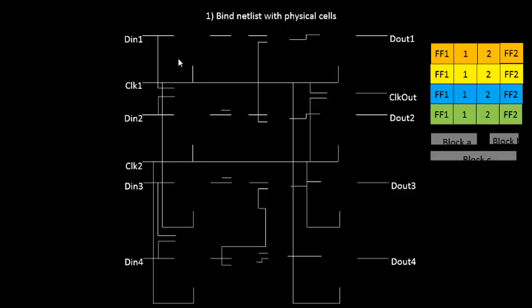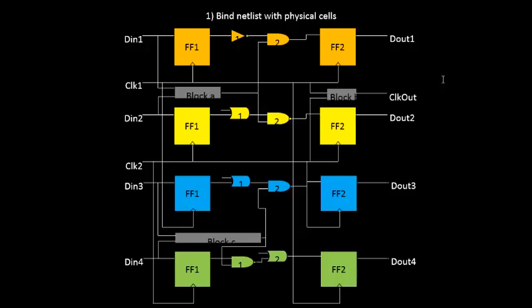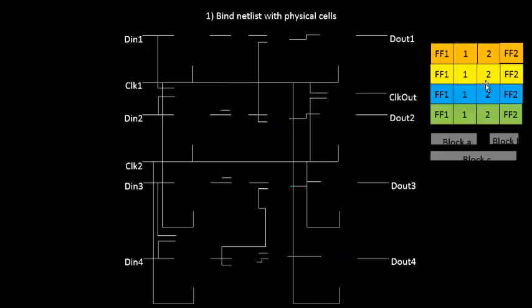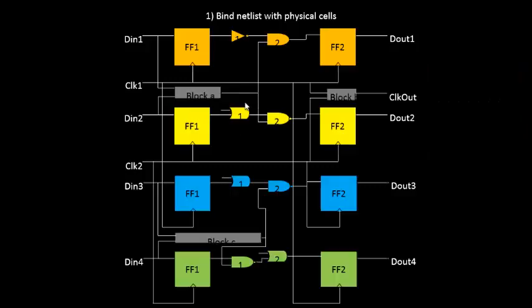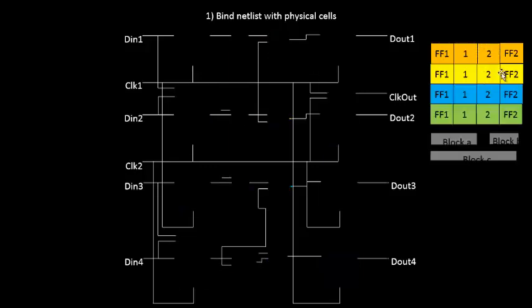First, we have to assign dimensions to these gates — that's what is meant by binding the netlist with physical cells. What you see here is a logical connection between gates; we have to bind these gates with a physical view. We take each element from the netlist and give it a proper shape and size. For example, flip-flop 1 is given a square shape, the NOT gate (gate 1) is given a square shape, and the AND gate (gate 2) is also given a square shape.